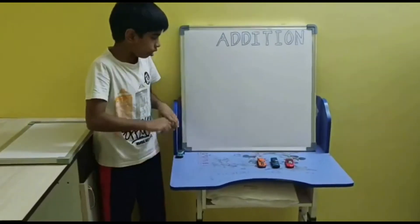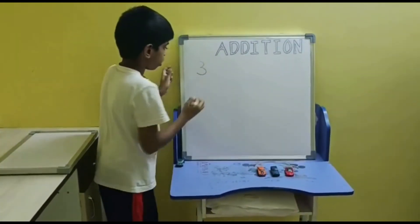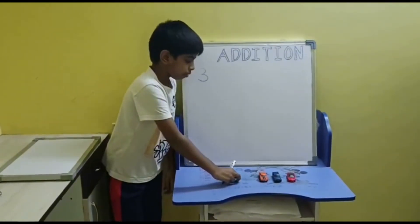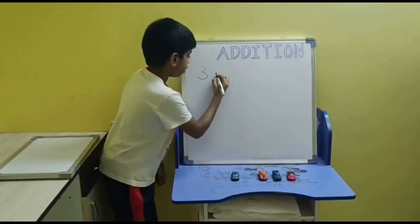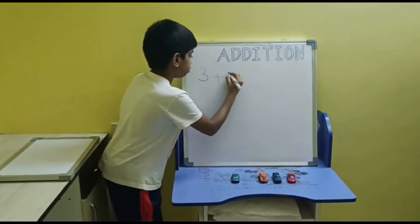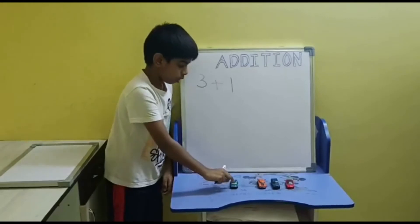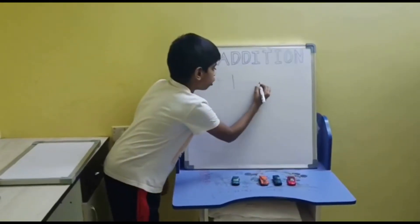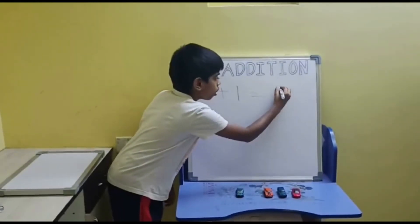Now I am going to join one cow. Join means plus. Plus one cow. So one, two, three, four. This is equal to four cows.